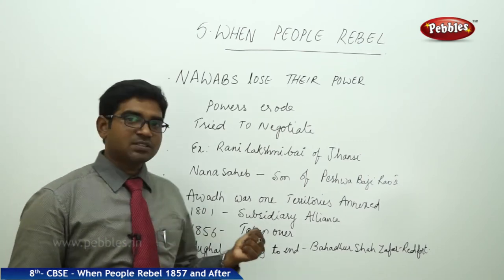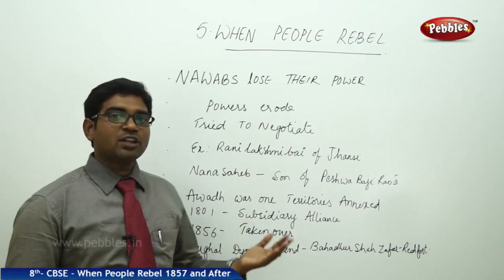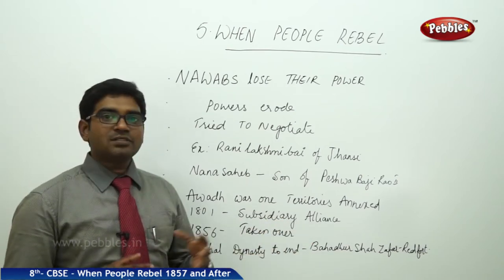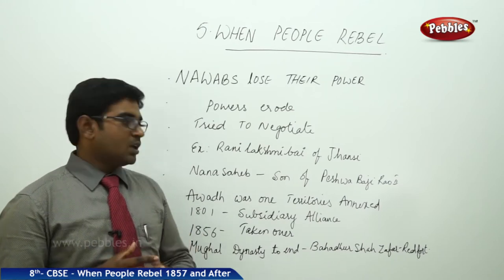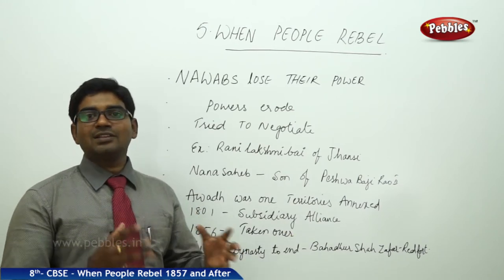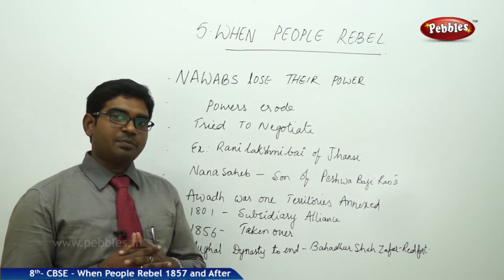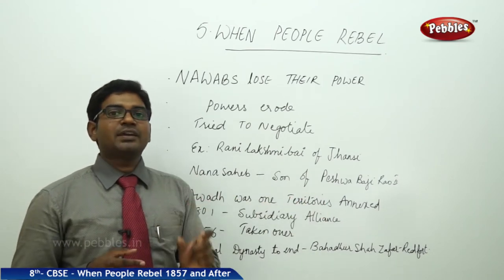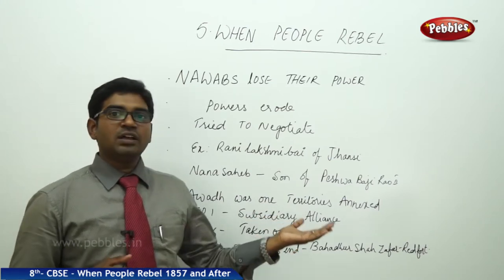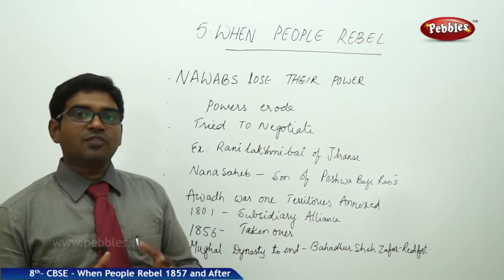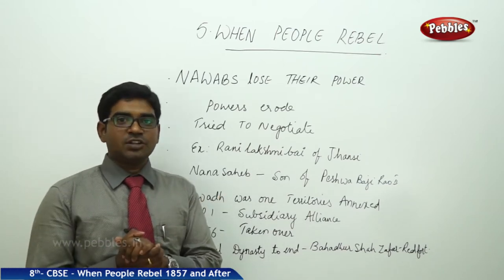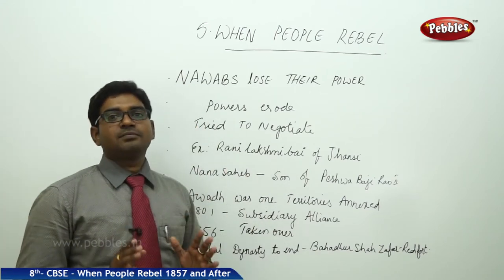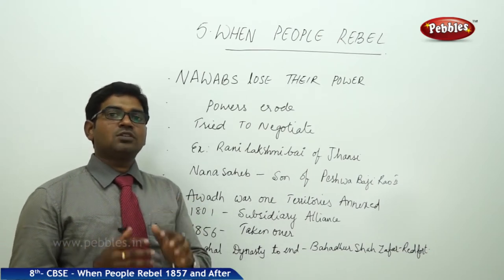Awadh was one of the territories annexed — in 1801, a subsidiary alliance was implemented, meaning the ruler had to maintain the British army and pay for it. If the ruler failed to pay, land from the territory would be grabbed in parts as compensation. By 1856, the entire Awadh was taken over. Regarding the Mughals, Bahadur Shah Zafar was recognized as the last Mughal emperor. Canning stated that after Bahadur Shah Zafar, his successors would only be called princes, not emperors. He was moved out of the Red Fort.